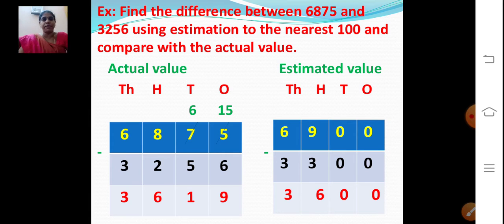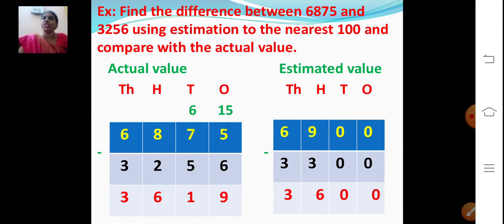Now we will see one example for this. Find the difference between 6875 and 3256 using estimation to the nearest 100 and compare with the actual value. What do you mean by difference? Subtraction. Find the difference between 6875 and 3256 using estimation to the nearest 100 and compare with the actual value.